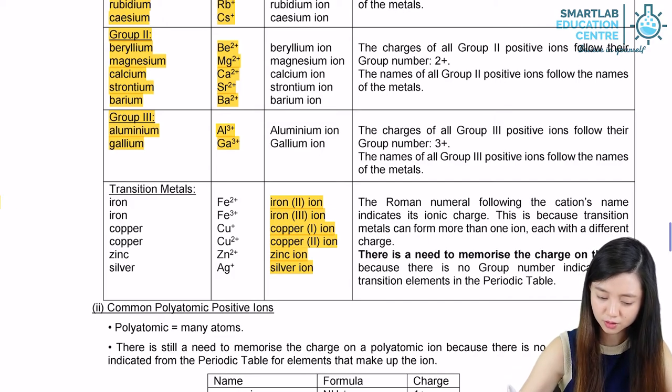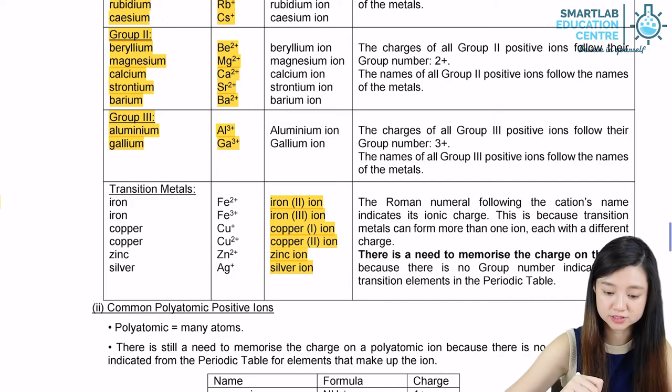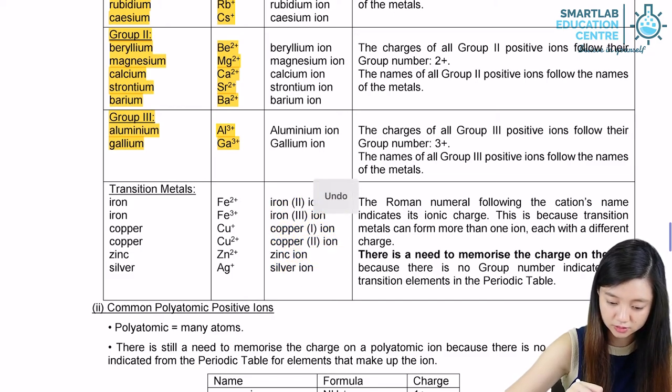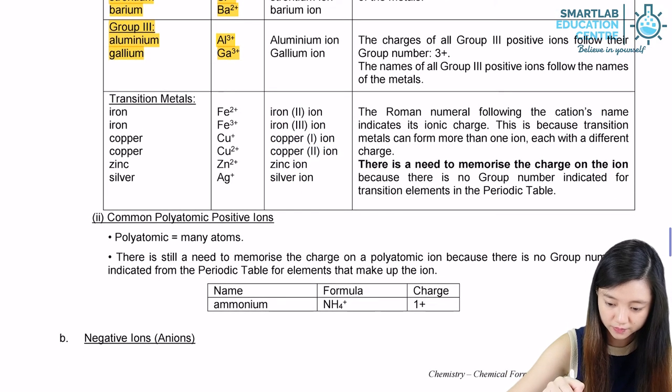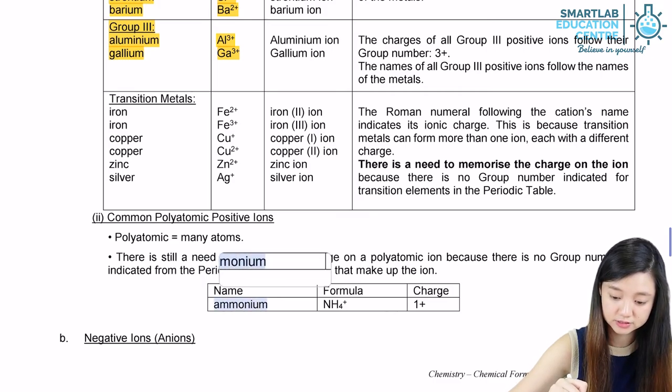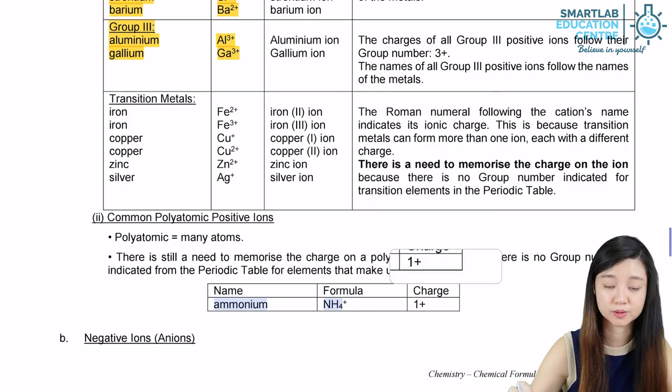There are also some common polyatomic positive ions that we should memorize. So there's an ammonium cation. It is NH4 plus. So this one we have to memorize by heart.